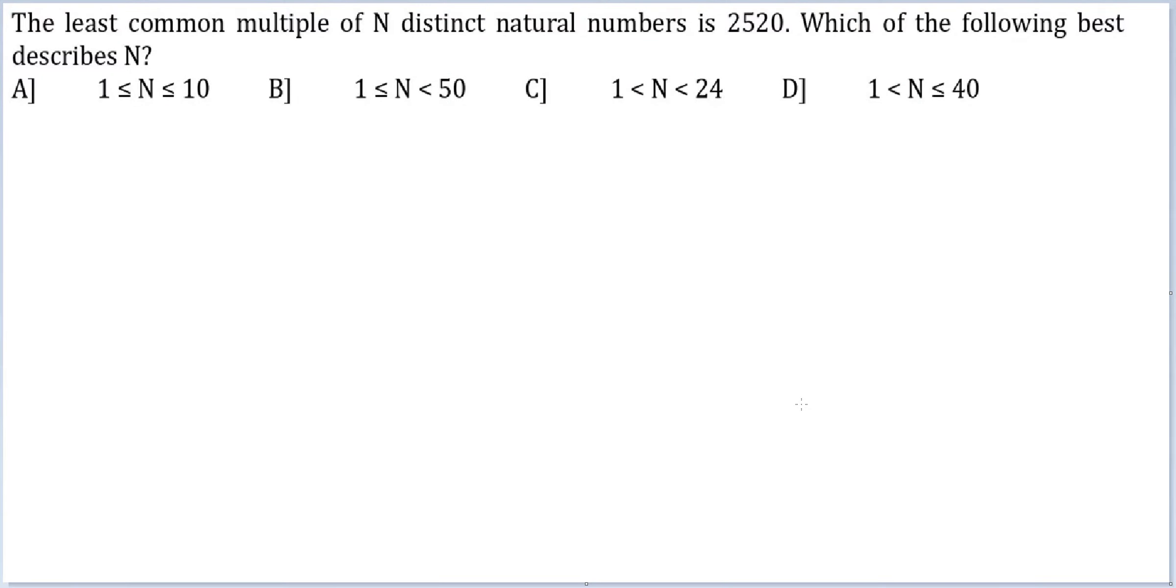Let's look at this question. The least common multiple of n distinct natural numbers is 2520. Which of the following best describes n?